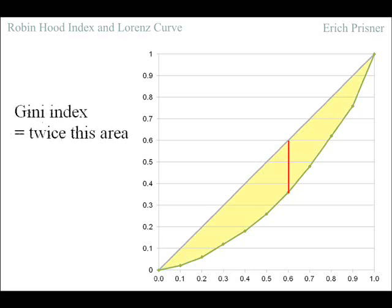Another measure of inequality is the Gini index which is defined as twice the area between Lorenz curve and diagonal. How are Gini index and Robin Hood index related? If we assume a fixed Robin Hood index, say 24%, different Lorenz curves can have this maximum vertical distance between Lorenz curve and diagonal of 0.24.